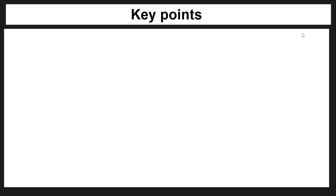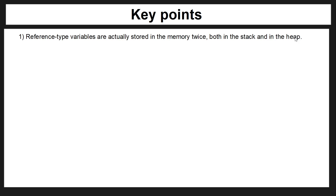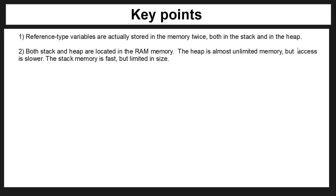In our previous video on primitive types, we learned that they're stored in the stack. Reference type variables are actually stored in memory twice — both in the stack and in the heap. Both the stack and heap are located in RAM memory. The heap has almost unlimited memory but access is much slower, while the stack is very fast but limited in size.